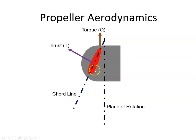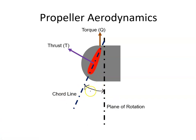Just like the wing, the propeller will have a cord line going from the leading edge to the trailing edge. And on an aircraft we have what we would call an angle of incidence, which is the angle between the cord line and the longitudinal axis of the aircraft. But for the propeller, we're going to have this angle here called beta, and that is the propeller blade angle. The blade angle is the angle between the cord line and the plane of rotation.